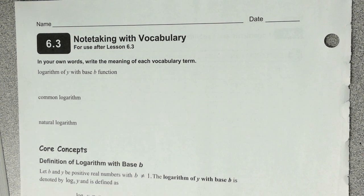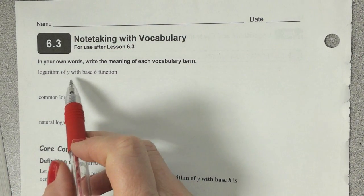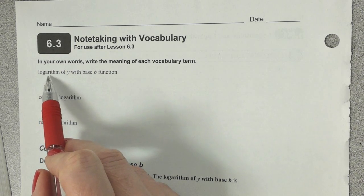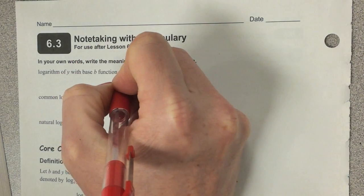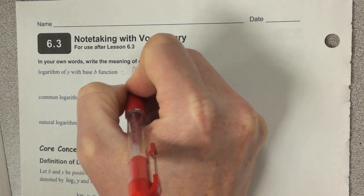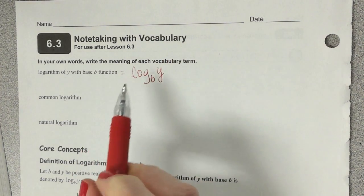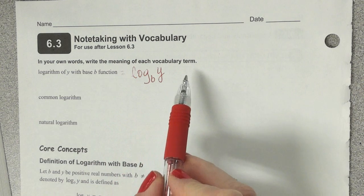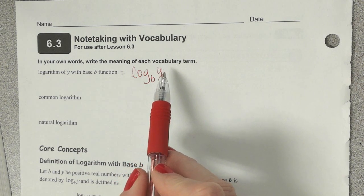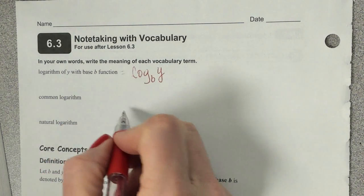All right. So we are in section 6.3 looking at logarithms. We just talked a minute ago about what a logarithm is and we're going to continue with that. So it says if we have logarithm of y with base of b, how do we write that? Well, that's going to be written this way. It's going to be log with the base of b of y. And we'll come back to that.